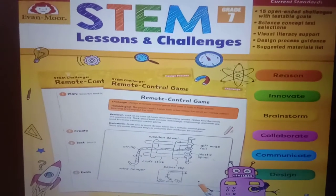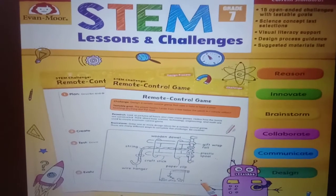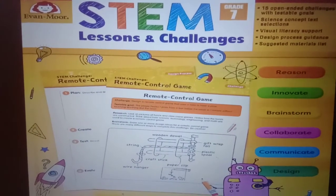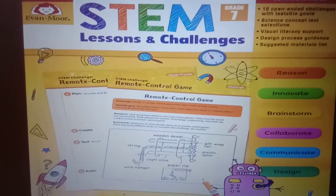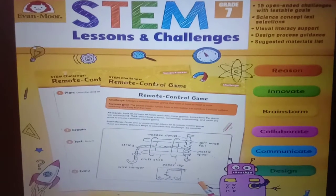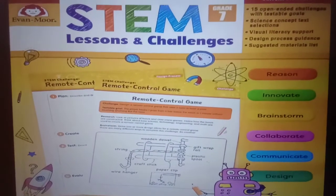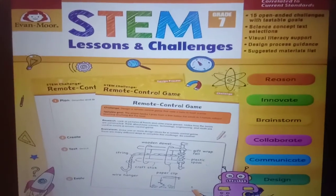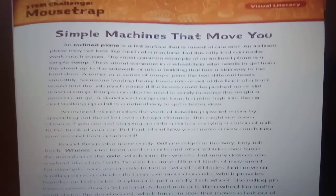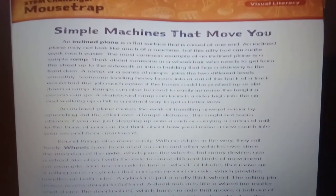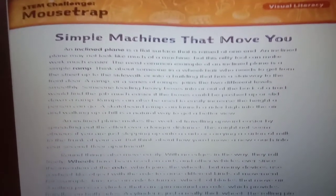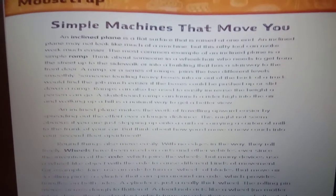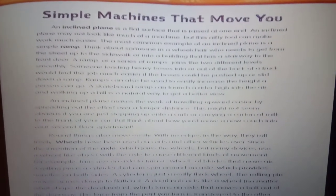Students, we know that simple machines make our work easy and fast. In 4th and 5th standard we studied some simple machines like inclined plane, pulley, lever, etc. An inclined plane is a flat surface that is raised at one end. Inclined plane may not look like much of a machine, but this nifty tool can make our work easy. Some common examples of an inclined plane include a simple ramp.